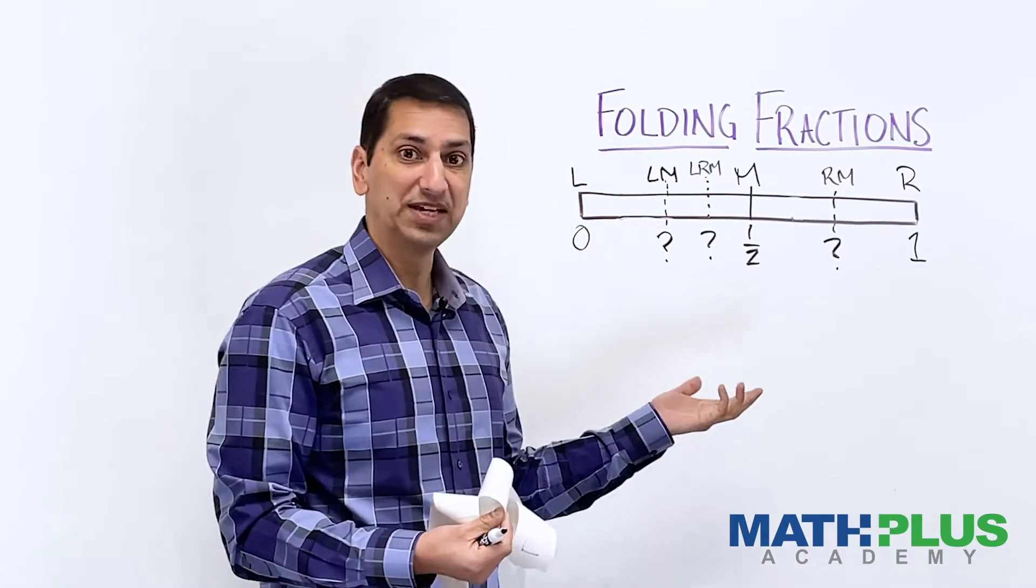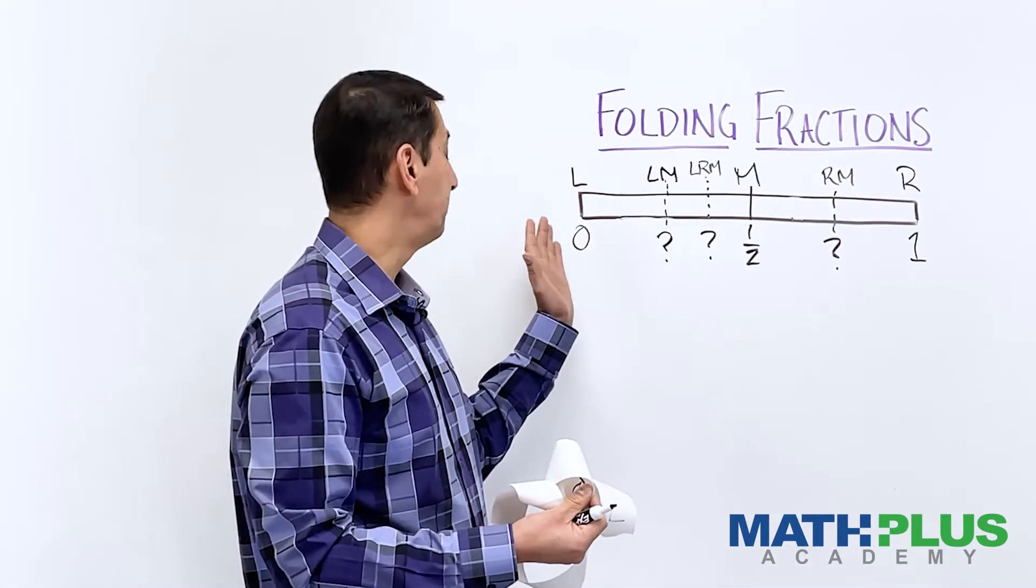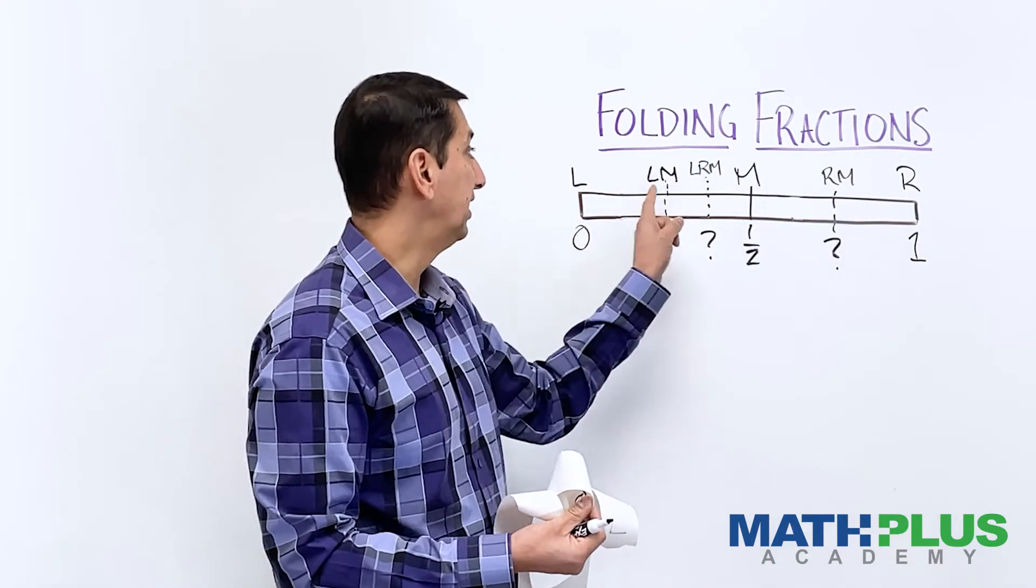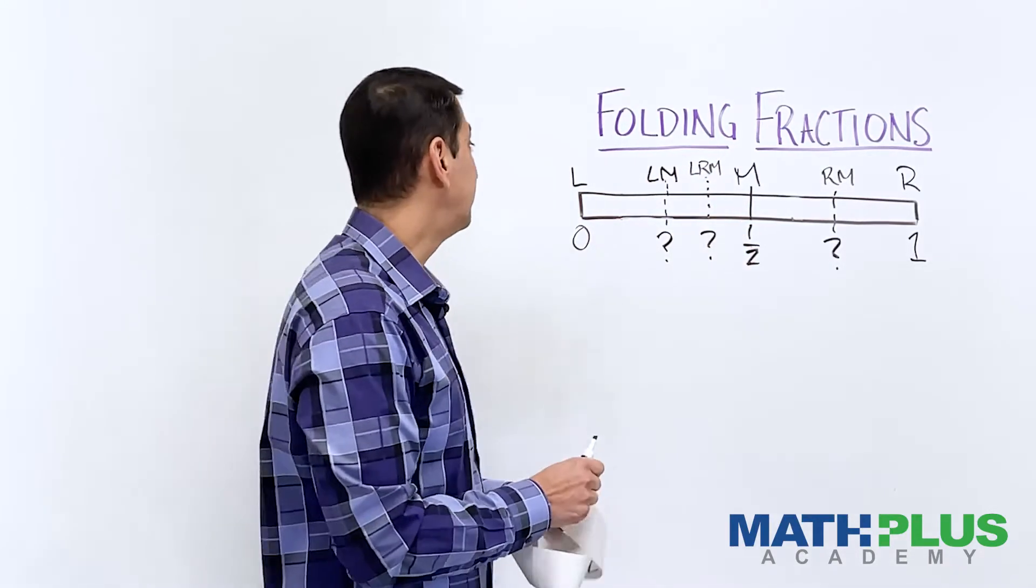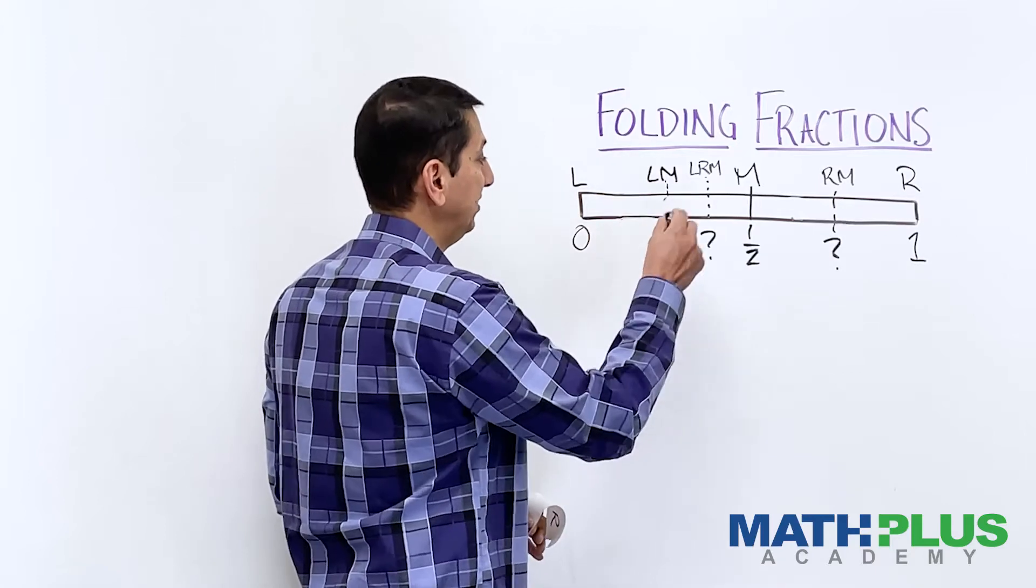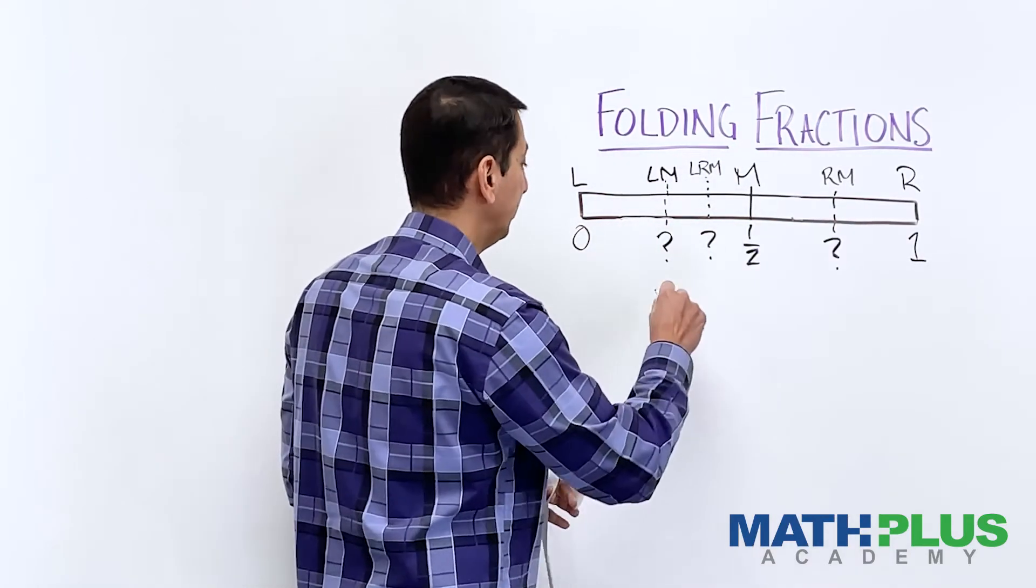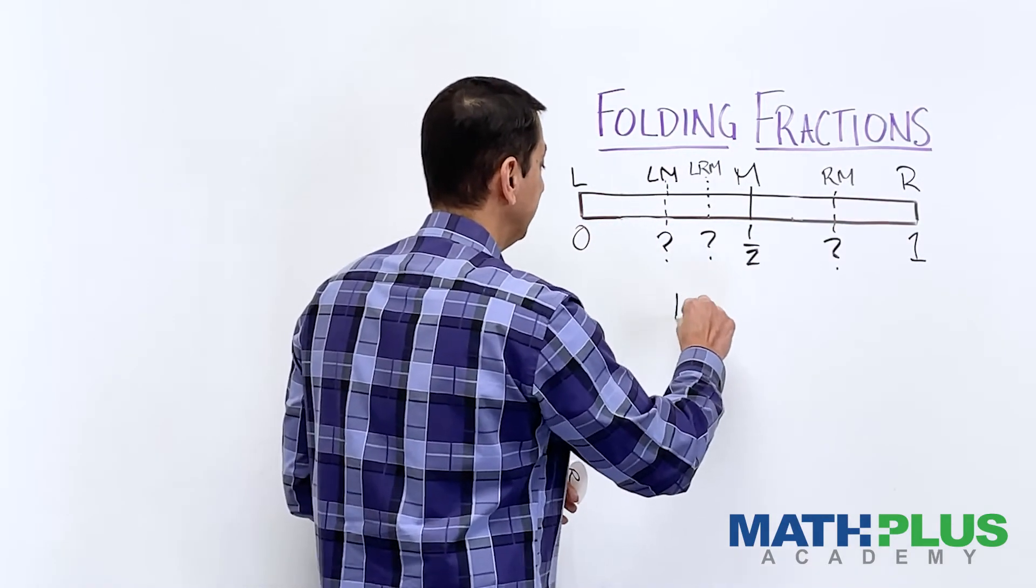And then you could also think about kind of backwards. So, so far we've been talking about folding and then labeling them. But what if I said this place somewhere on here, I don't know where, is made by doing this pattern.